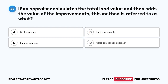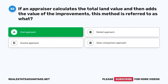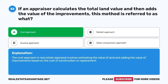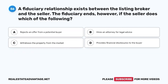Question 55. If an appraiser calculates the total land value and then adds the value of the improvements, this method is referred to as what? A. Cost Approach. B. Market Approach. C. Income Approach. D. Sales Comparison Approach. The correct answer is A. Cost Approach. The cost approach in real estate appraisal involves estimating the value of land and adding the value of improvements based on the cost of construction or replacement.